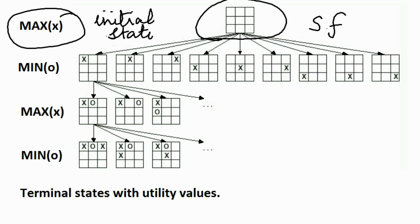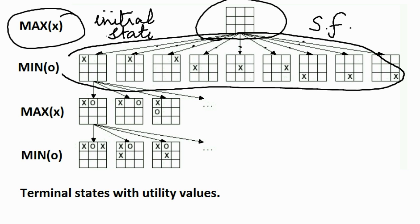Now consider that this particular node has a successor function. The successor function will give a list of all the successor moves that are possible — these are the 9 moves that Max can make from the initial node. Similarly, the successor function for Min will give a set of moves that Min can make.